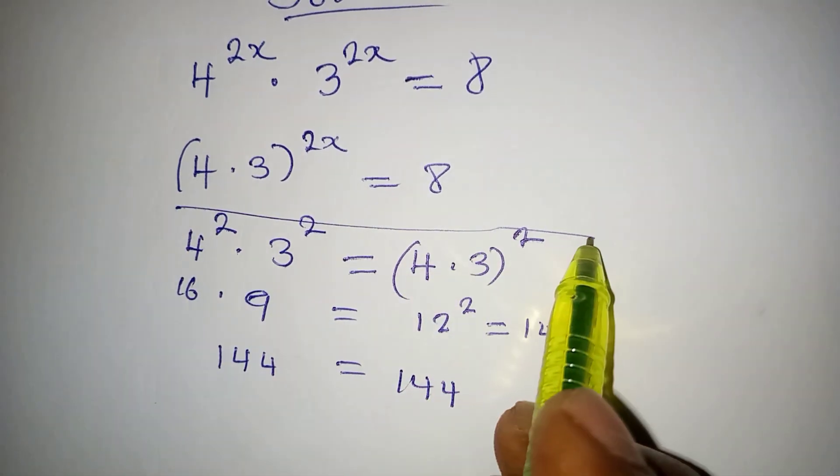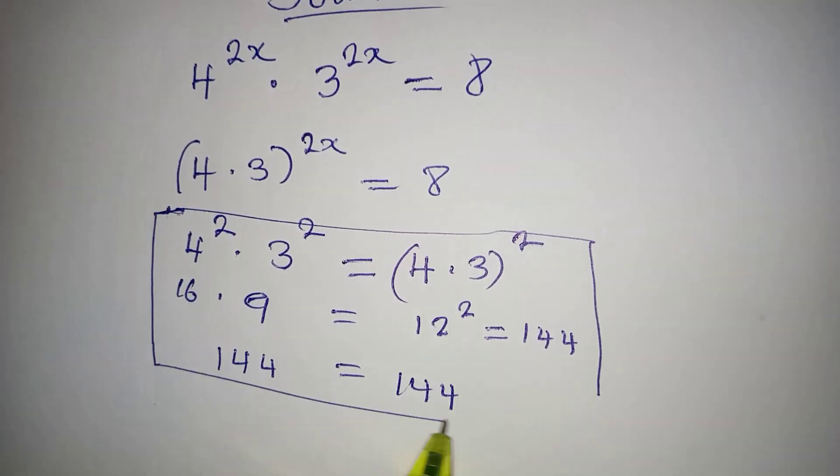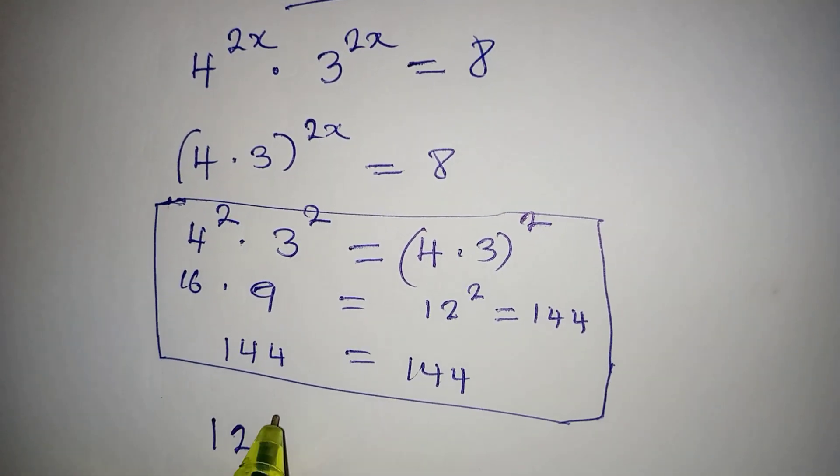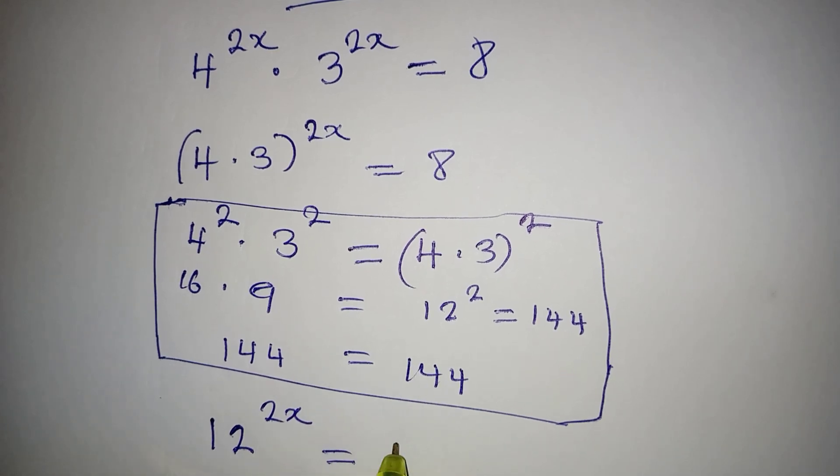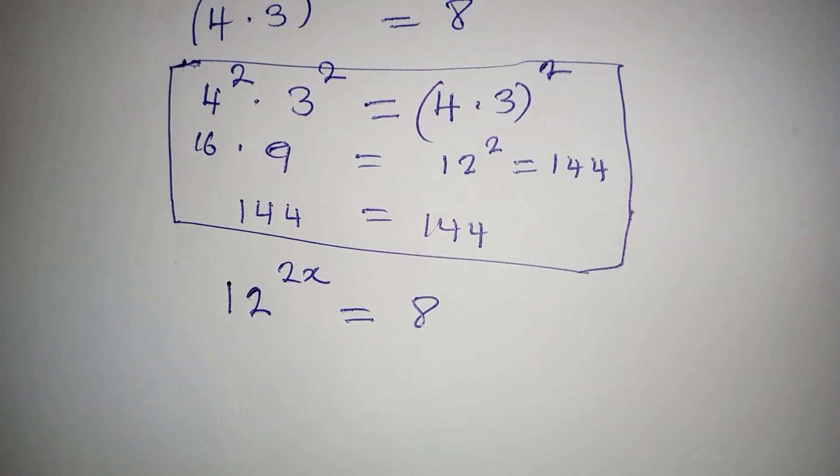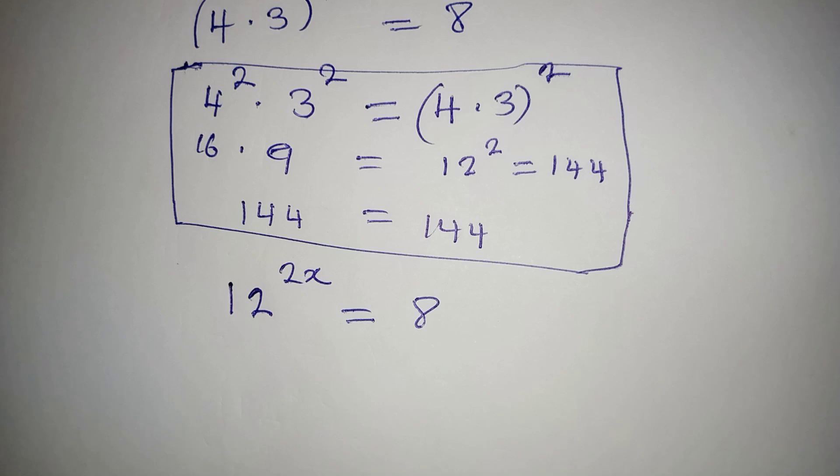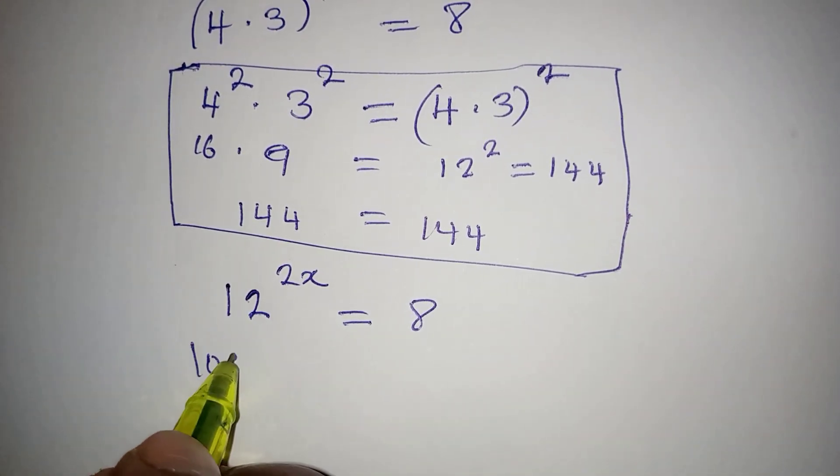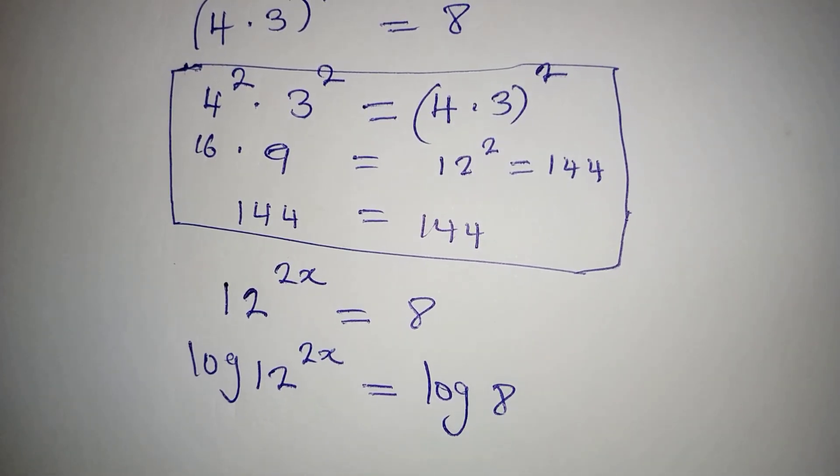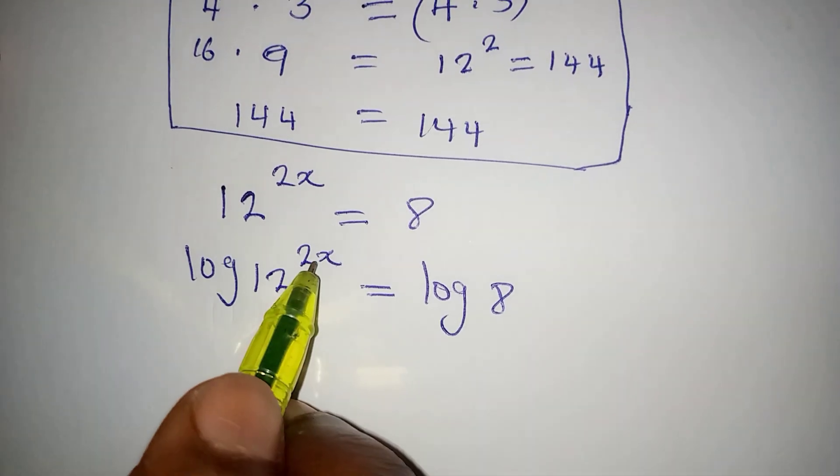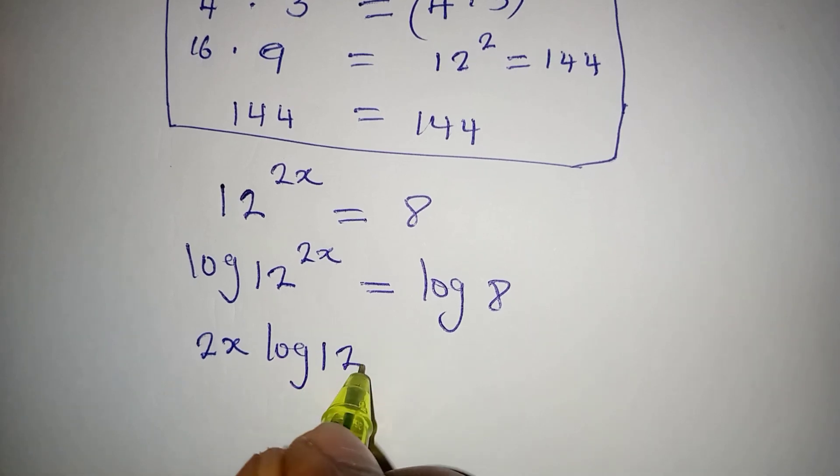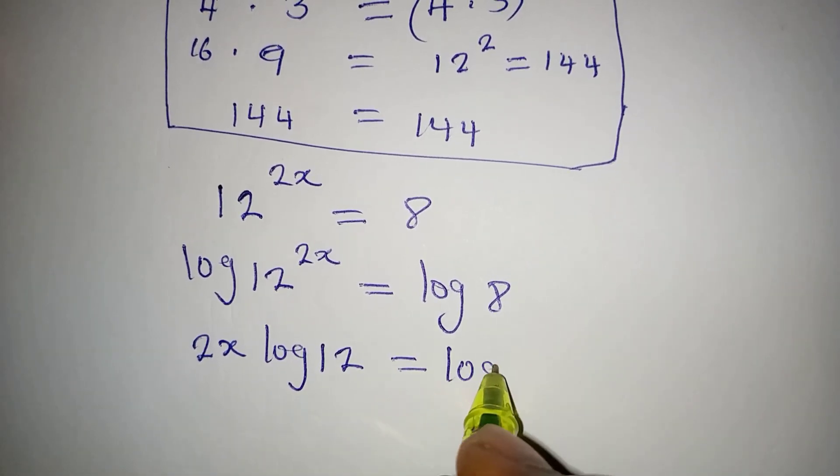Now going back, we're going to have 12 to the power of 2x equal to 8. Now that we have this, we cannot express 8 and 12 to have the same base. What do we do? We will take the log of both sides, so we have log 12 to the power of 2x equal to log 8. The powers can always go behind, so we have 2x log 12 equal to log 8.